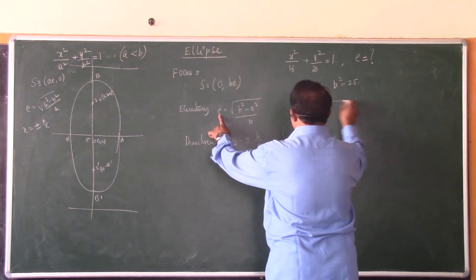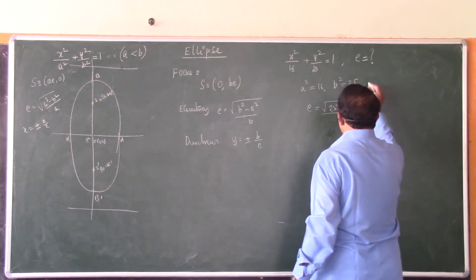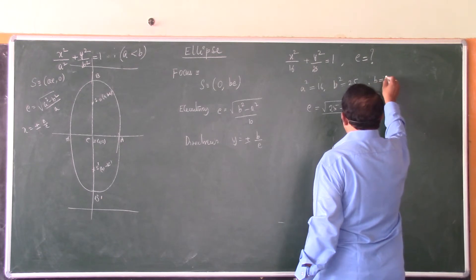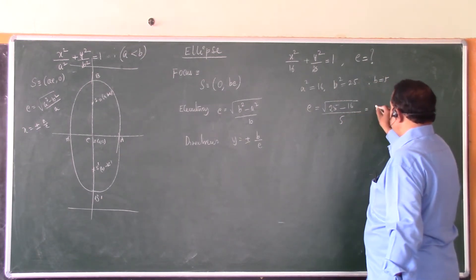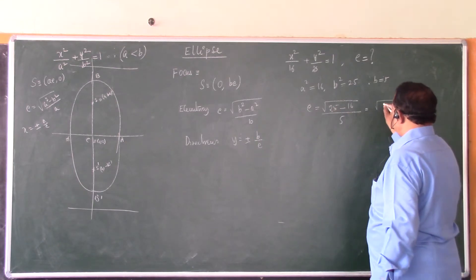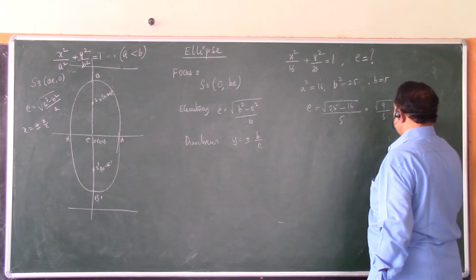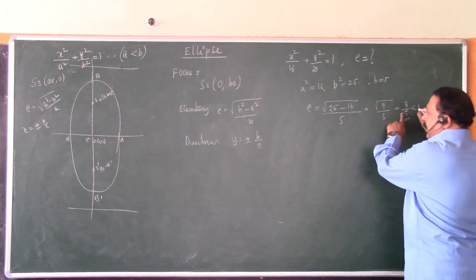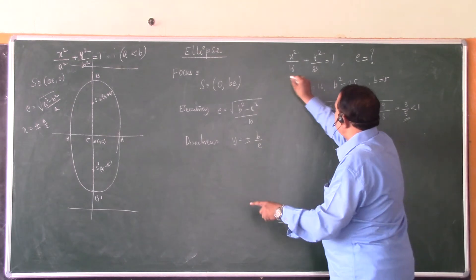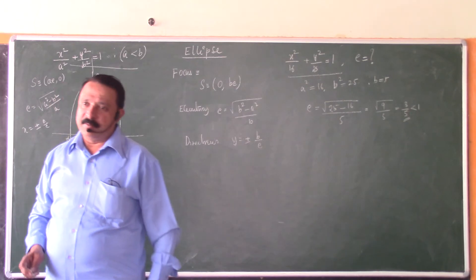e equals square root of 25 minus 16 divided by b equals 5. This is root 9 by 5, that is 3 by 5. And note that 3 by 5 is less than 1. Therefore, this will represent an ellipse. Eccentricity less than 1 should represent an ellipse.